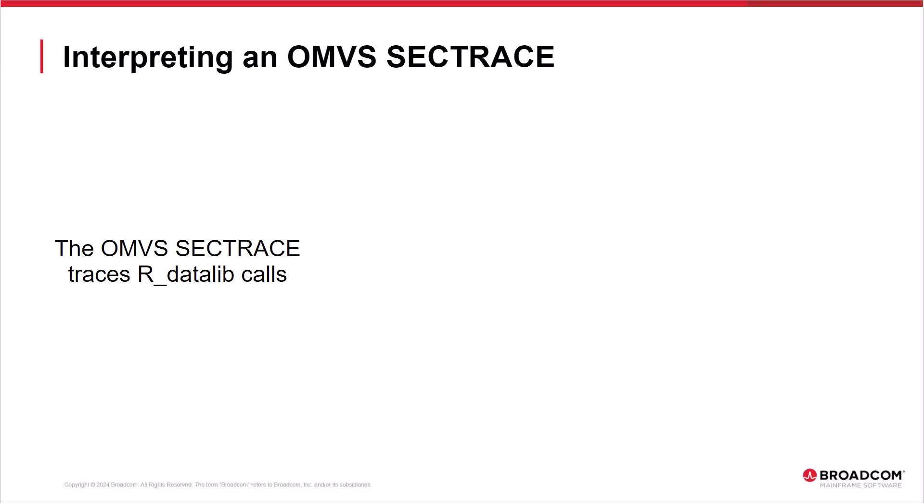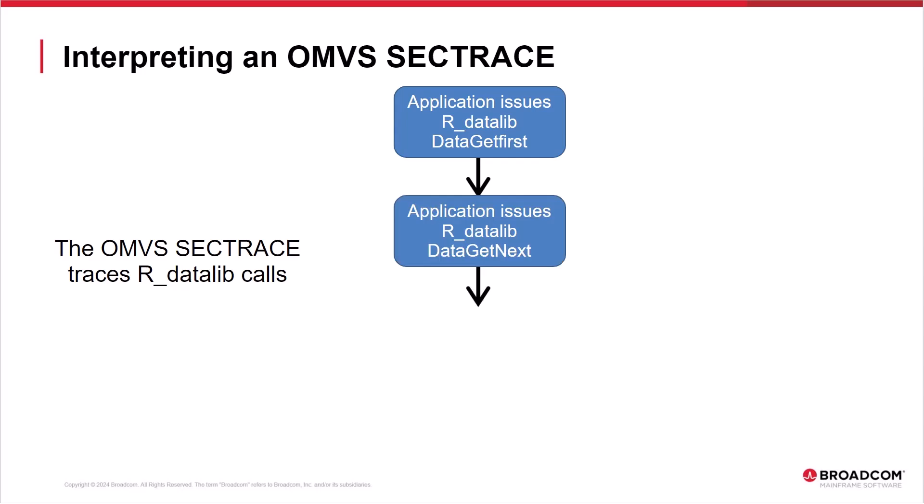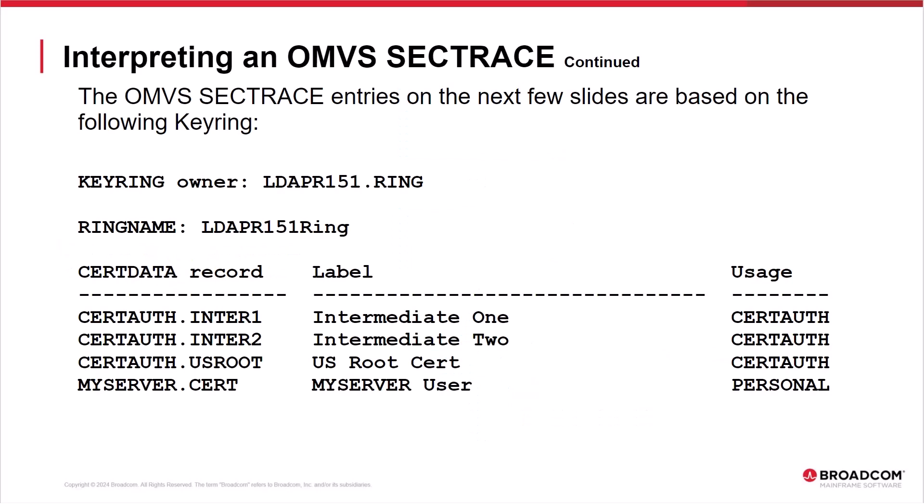The OMVS SECTRACE traces R_datalib calls that an application makes to request the key ring as well as all of the certificates in the key ring. The first R_datalib call is FUNCTION=DATA GET FIRST to request key ring information and the first certificate connected to the key ring. Then the application will keep making R_datalib calls with FUNCTION=DATA GET NEXT to request the next certificate until there are no more certificates in the key ring, at which point the ESM will return return code 8/8:44. The OMVS SECTRACE entries on the next few slides are based on the following key ring with a personal server certificate MYSERVER.CERT and its signing chain of three cert auth certificates.